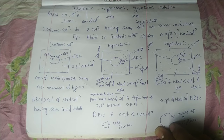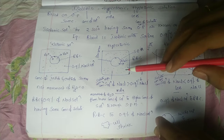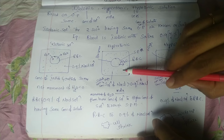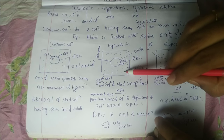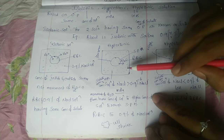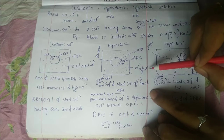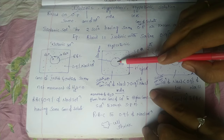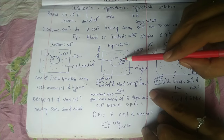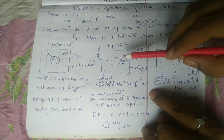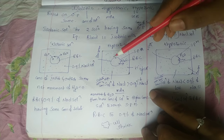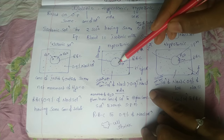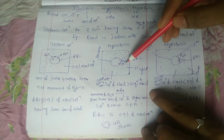Ippudu hypertonic solution gurinchi telisko nnamo. Hypertonic solution - hyper ane adhi move avutundi. 0.9 percentage of NaCl solution is equal to high concentrated solution. Ikkada RBC undi gada, RBC cell ane adhi low concentration undi. Ippudu osmosis jarukali ante, moment of water molecules - lower concentration of solution to higher concentration kada. Ikkada lower concentration adhi RBC cell lower kada, so lower concentration solution ninchi higher concentration of solution lo ki water molecules ekkha movement jarukindi.